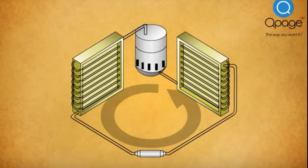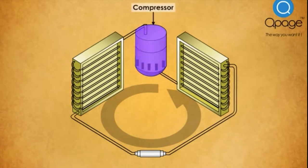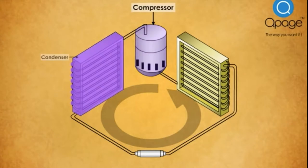Vapor compression is the most common of all of the refrigeration cycles, and it is also used as a method for air conditioning of buildings and automobiles.